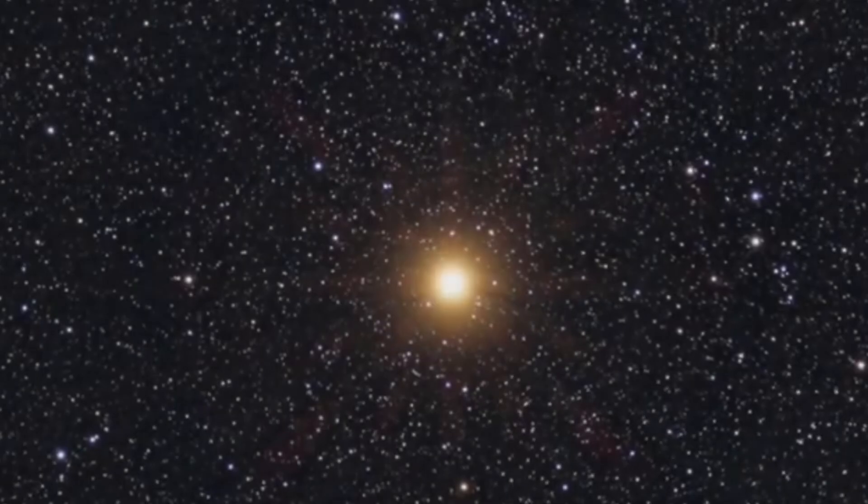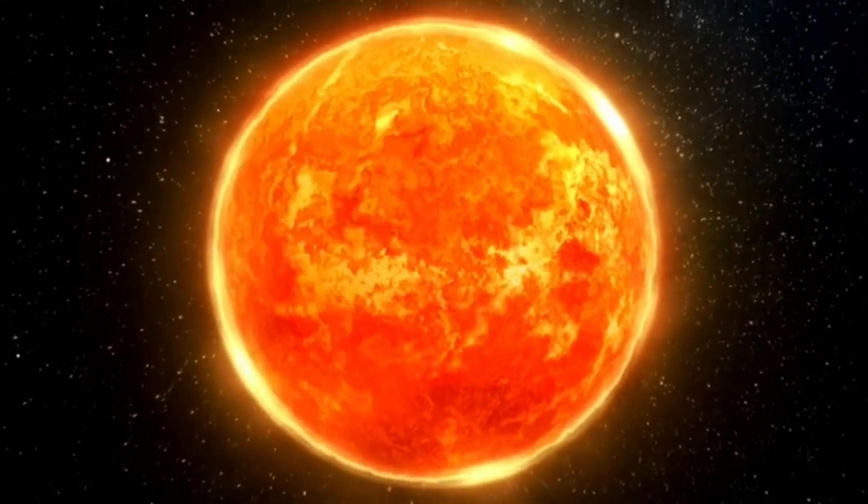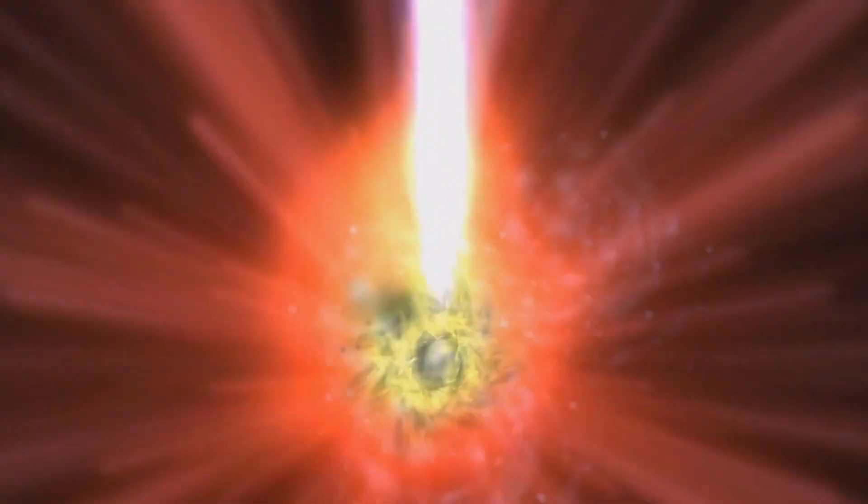Now, here's the interesting part. If Betelgeuse goes supernova, it won't harm us, but it'll leave a cosmic mark. Betelgeuse is Orion's shoulder, and losing it would be like Orion missing a limb. But hey, that's the circle of stellar life for you.